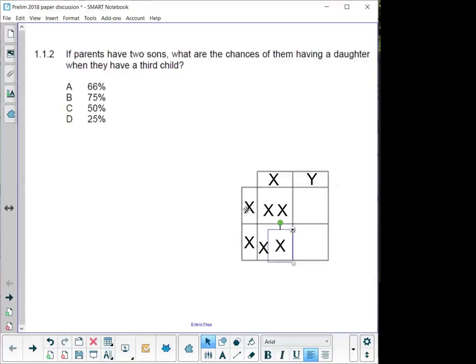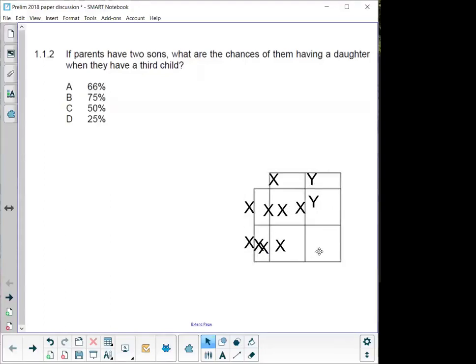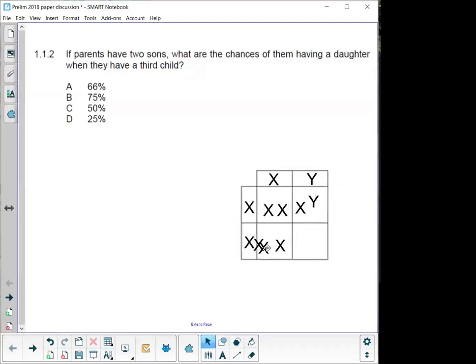On this side, mom is giving an X. Dad is giving a Y. So then we have a boy, and mom, again, can only give an X over there. Sorry about that. Let me just move it. There we go. And dad gives a Y. So 50% is going to be XX, and 50% is going to be XY, which means the chances are still 50%. 50-50 chance.